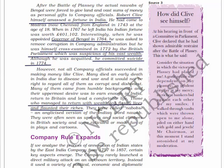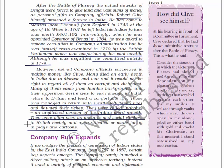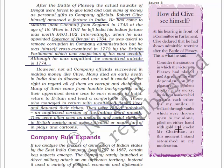They were called 'nabobs' - an anglicized version of the Indian word 'nawab' - and were often seen as upstarts and social climbers in British society, ridiculed in plays and cartoons. At his hearing in front of a parliamentary committee, Clive declared he had shown admirable restraint after the Battle of Plassey, saying: 'Consider the situation in which victory at Plassey had placed me. A great prince was dependent on my pleasure, an opulent city lay at my mercy, its richest bankers bid against each other for my smiles. I walked through vaults piled on either hand with gold and jewels. Mr. Chairman, at this moment I stand astonished at my own moderation.'